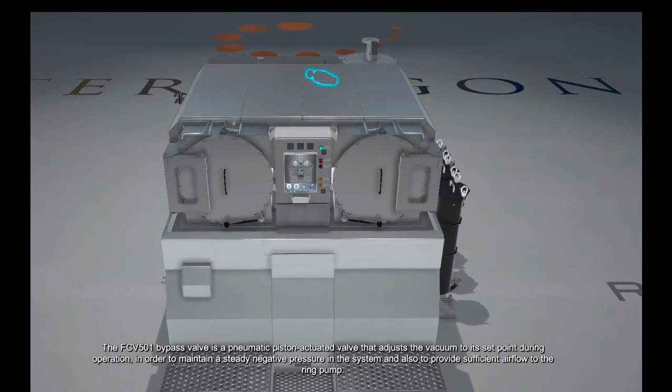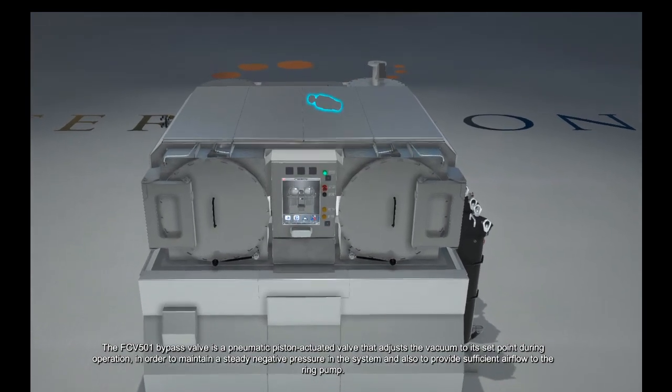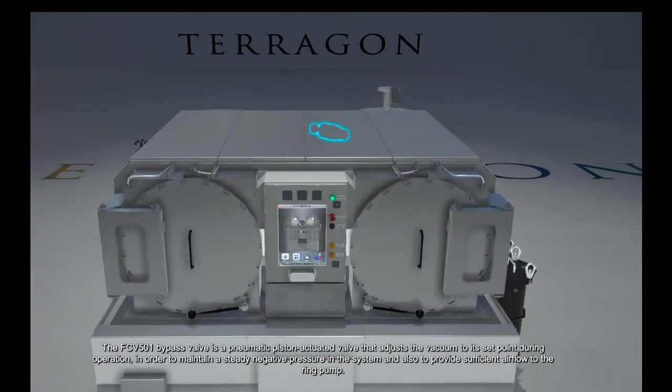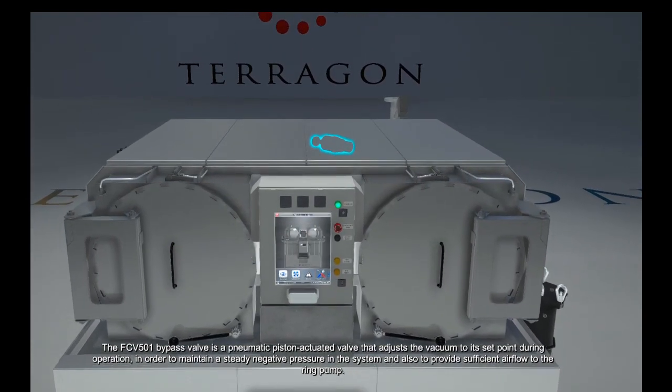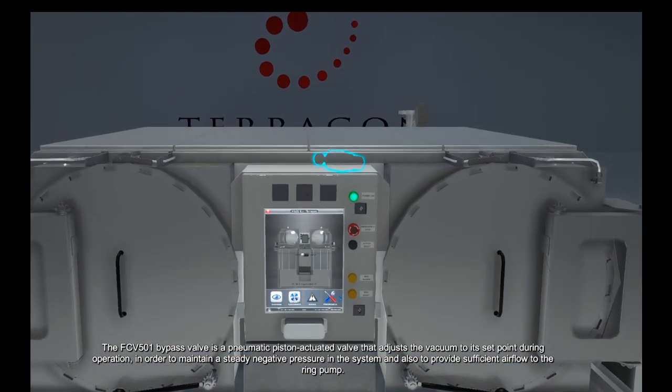The FCV501 bypass valve is a pneumatic piston-actuated valve that adjusts the vacuum to its set point during operation in order to maintain a steady negative pressure in the system and also to provide sufficient airflow to the ring pump.